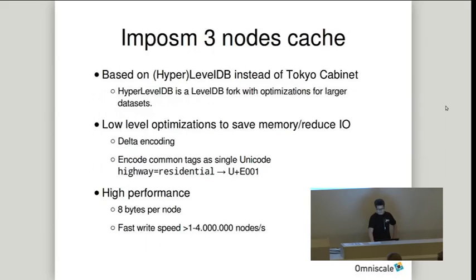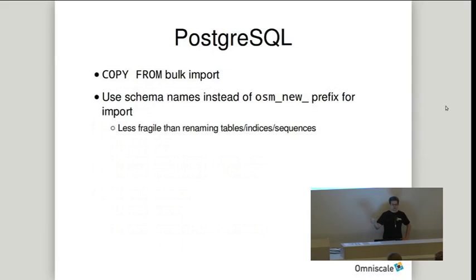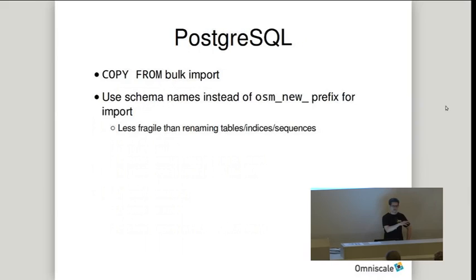We optimized the actual import into PostgreSQL and PostGIS. Impossum 3 now uses COPY FROM, a bulk import method that dramatically reduces the CPU usage of Postgres itself. We also support schema names — not related to the database schema, but like a namespace for all table names. If you're using Impossum 2's deploy-production-table option, this is now less fragile than with Impossum 2.